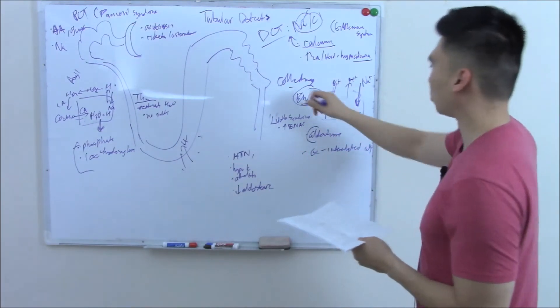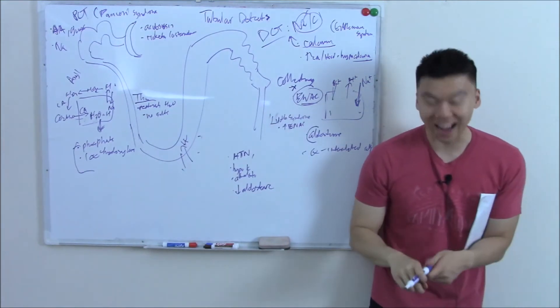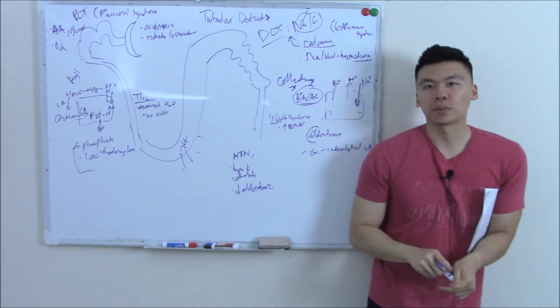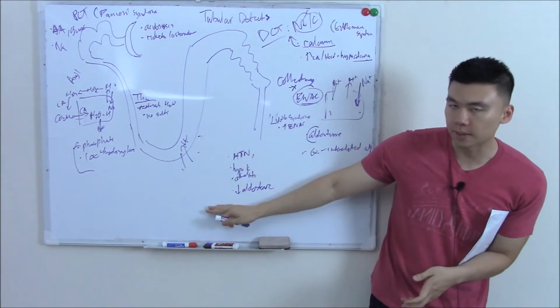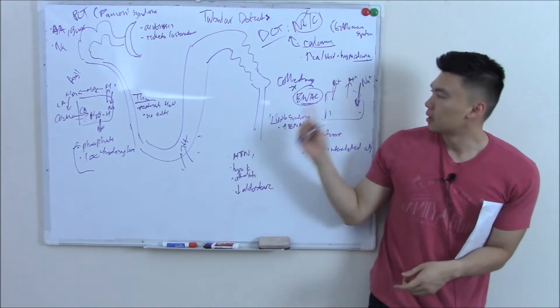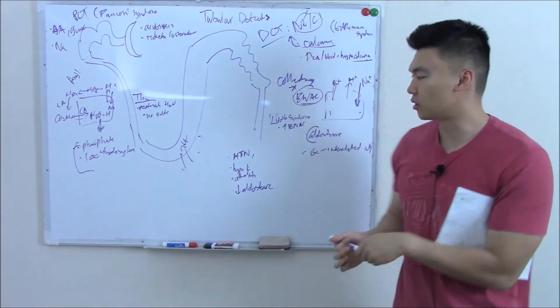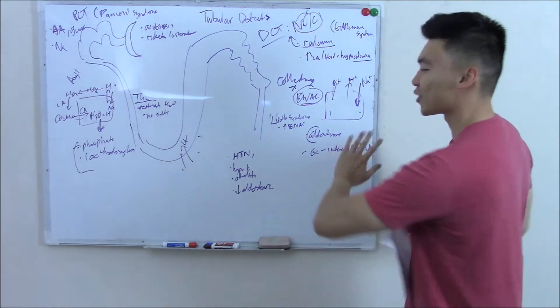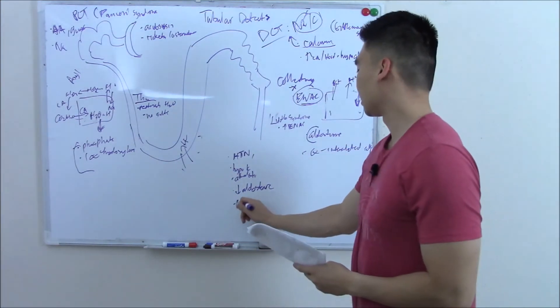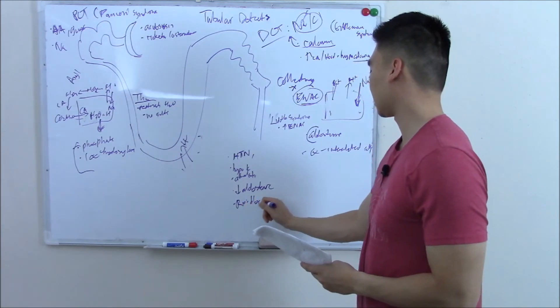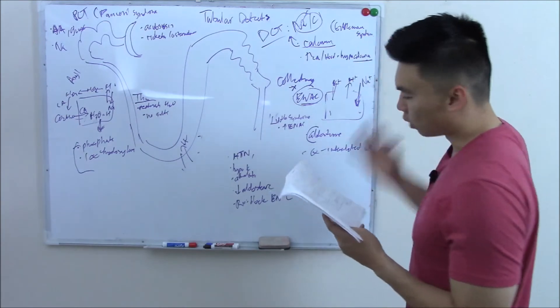How do you treat it? Well, you're going to have to block that ENaC channel. You already know what I'm going to ask you. Name some pharmacology that blocks that ENaC channel. Specifically, what's the name of those drugs that block the ENaC channel? We just went over it last video. So hopefully you're able to say it. I'm not even going to write it down. That's how much confidence I have in you. So I'll write treatment equals block ENaC.